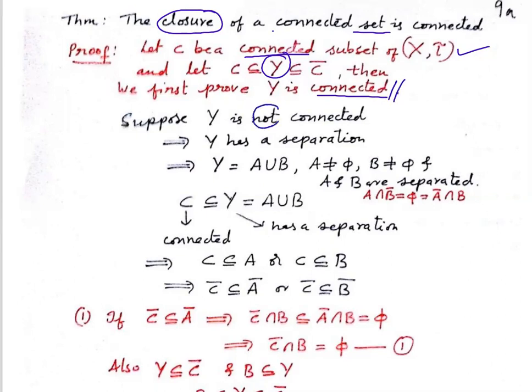Suppose Y is not connected. That means Y has a separation — we can write Y as the union of two non-empty separated sets. So we write Y as union of A and B, where A and B are non-empty and separated.